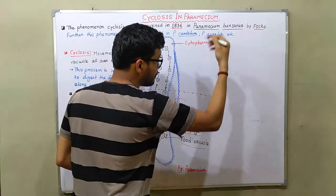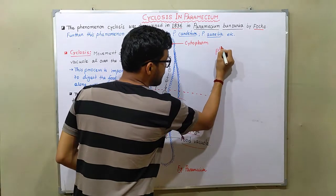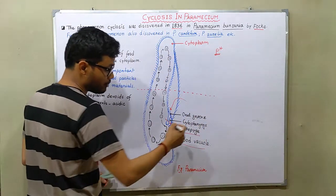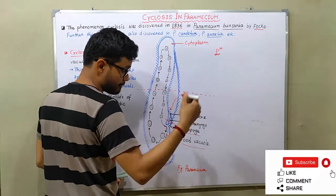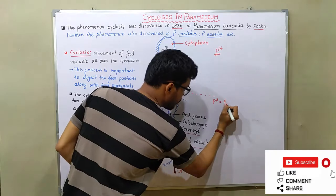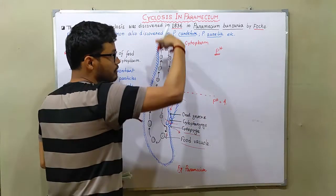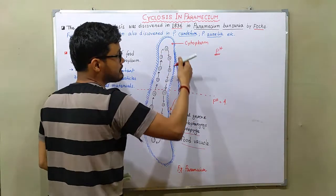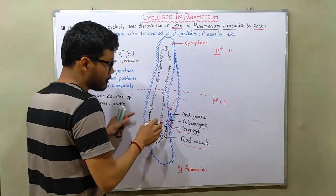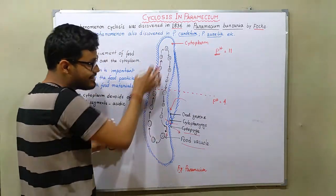In the ventral side where food vacuoles appear first, this side's pH is pH 4, and in the upper side, this side's pH is 11. So this pH difference is very much important for the particular paramecium to digest the particular food or food material.